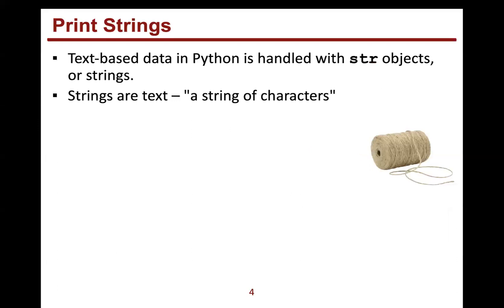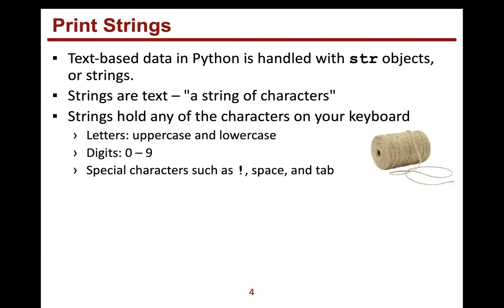Text-based data is handled in Python with strings, or we can call them str objects — S-T-R — because that's the official class defined in Python to create strings. Strings are text, and they're called strings because they are a string of characters. Characters can mean any of the characters on your keyboard, including letters uppercase and lowercase, digits like one through nine and zero, as well as special characters such as the question mark, exclamation mark, a space, and even a tab.